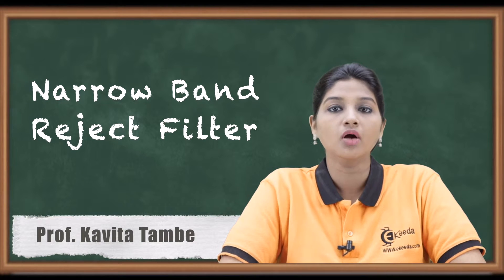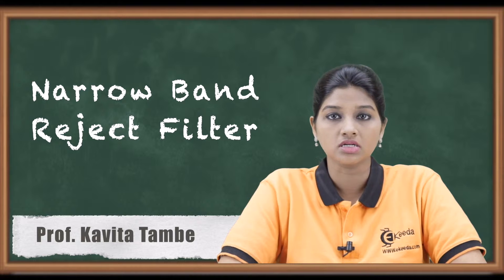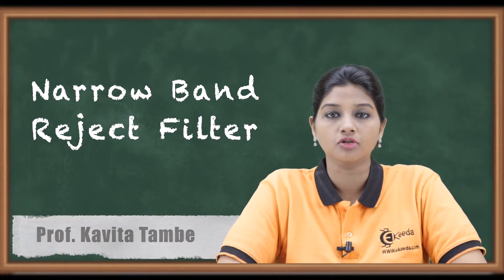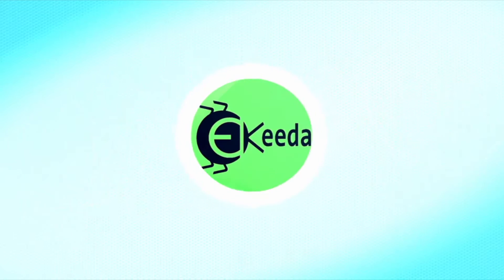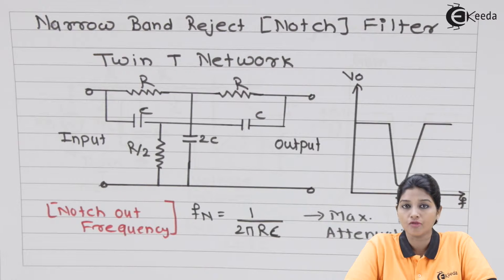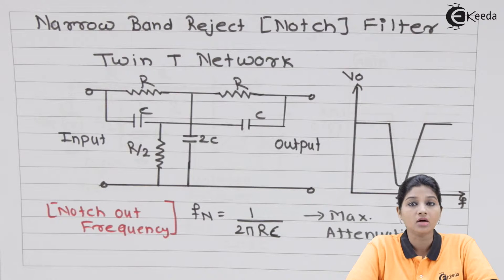Hello friends, in today's video we are going to see what do you mean by narrow band reject filter, what is the circuit and frequency response of narrow band reject filter. The narrow band reject filter is also called as notch filter and it comes under the category of band reject filter.